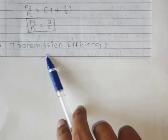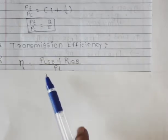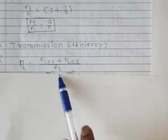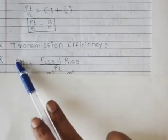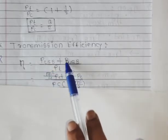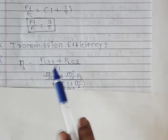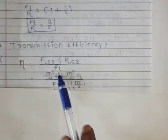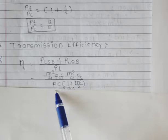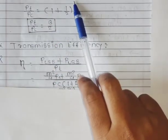Next we look at transmission efficiency, which is also a common exam topic for amplitude modulation. The formula for transmission efficiency (η) is: η equals P_LSB plus P_USB, divided by total power PT. We know P_LSB equals m squared by 4 times PC, and P_USB equals m squared by 4 times PC. And total power PT equals PC times (1 plus m squared by 2).